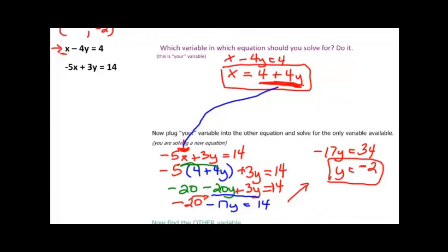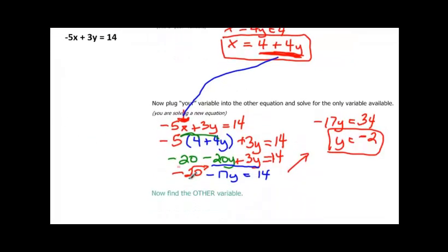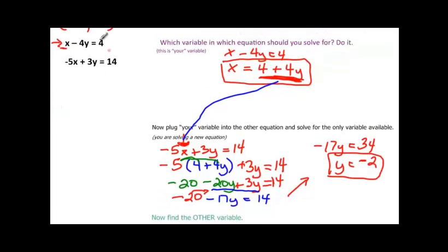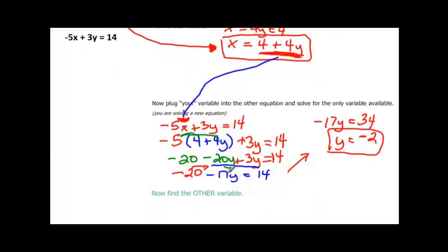So our ordered pair, so far we know that y is negative 2. But that's just the first substitution. Now we have to plug it back in to find the other variable. So we can go back to our original equations. But in substitution, when you have to solve one equation for a variable, that kind of makes a nice equation, and you haven't really changed the equation. So I'm going to plug mine back into that equation. So I'm going to come in here and say, x is equal to 4 plus 4y. And substitute in for the y.